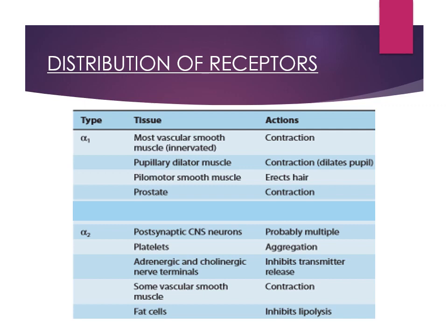The second messenger system: alpha 1 and alpha 2 are both G-protein coupled receptors. Alpha 1 is coupled with GQ, and alpha 2 with GI. Alpha 1 and GQ are coupled, so the second messenger mechanism increases IP3 and DAG. Increasing IP3 increases calcium, which means more smooth muscle contraction. This leads to vasoconstriction of vascular smooth muscles, increasing peripheral resistance and blood pressure.